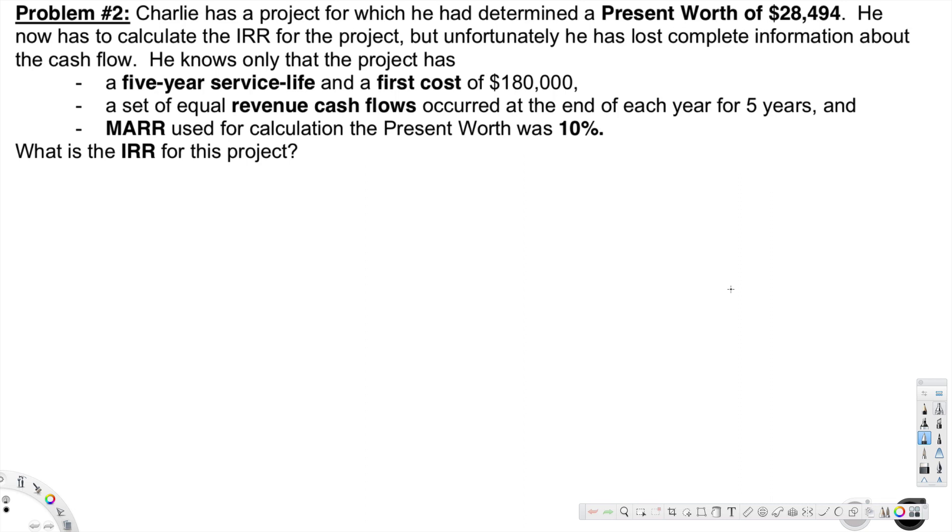Let's look at this problem. The question is asking: Charlie has a project for which he had determined a present worth of $28,494. He now has to calculate the IRR for the project, but unfortunately he has lost complete information about the cash flow.